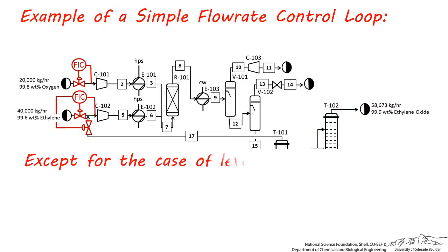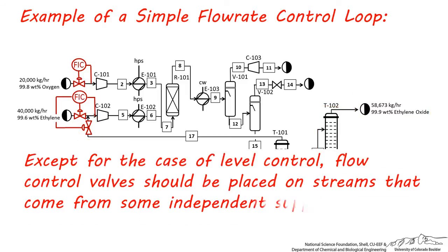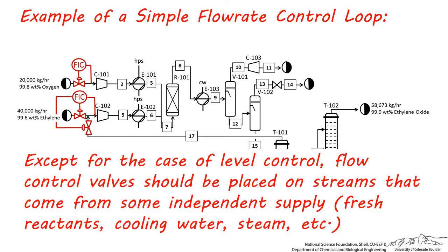Except for the case of level control, flow control valves should be placed on streams that come from some independent supply, such as fresh feed or utility, such as cooling water or steam. Always make sure that flow is controlled by using a supply that can be increased or decreased independently. If you must put a control valve on a process stream, try to make sure it's at the very beginning or end of the process, or it's on a vessel controlling liquid level.